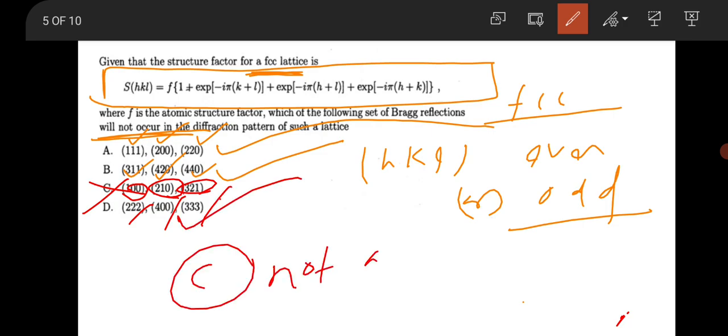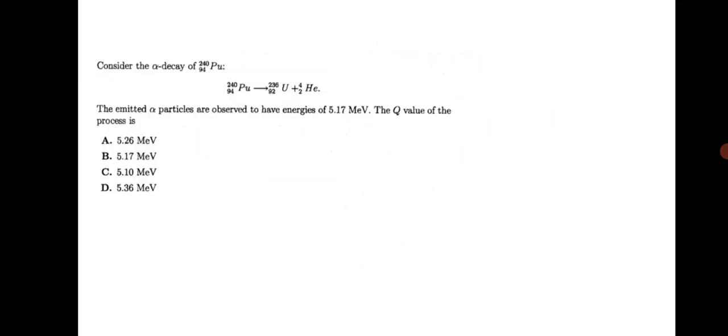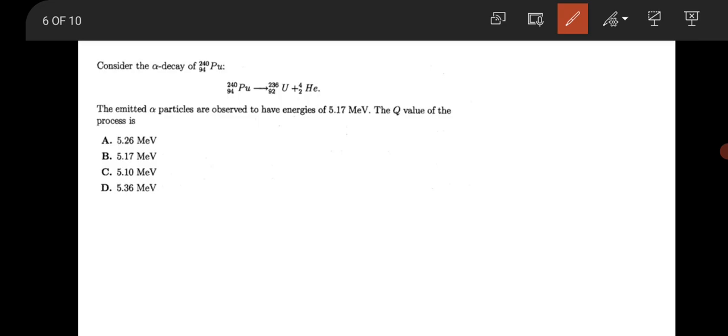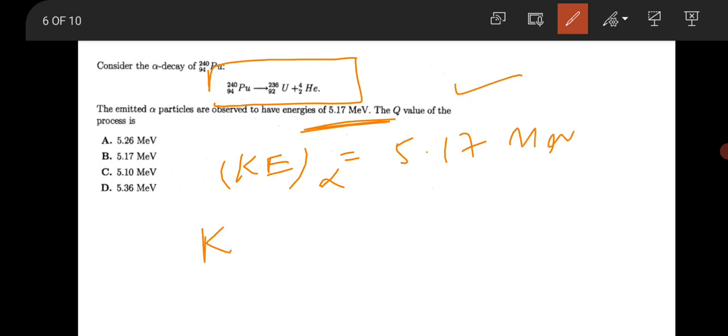The next question is from alpha decay and the reaction is given like this. The statement is that the emitted alpha particle is observed to have energy 5.17 MeV. So this is the kinetic energy of the alpha particle, that is 5.17 MeV. What will be the Q value?